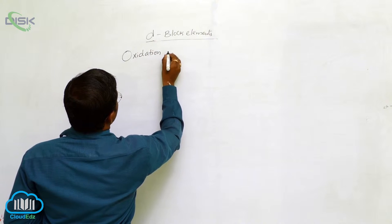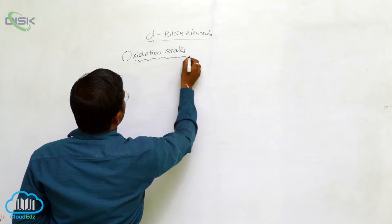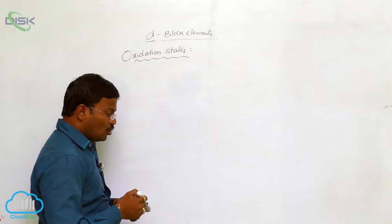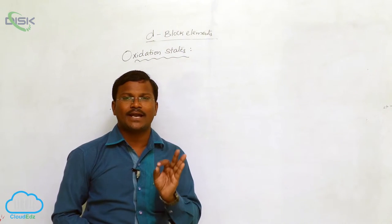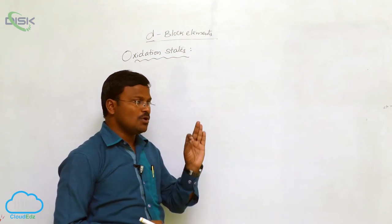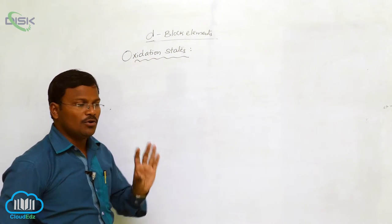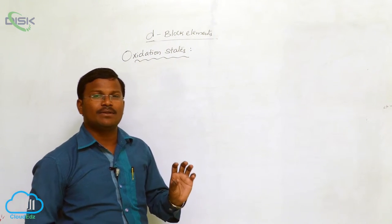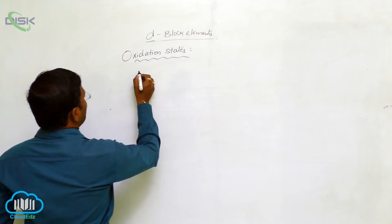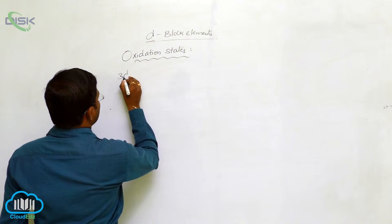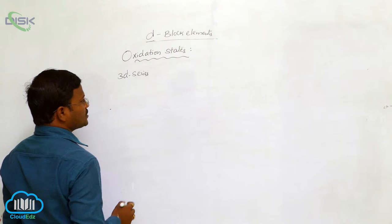Oxidation states are also called as oxidation number. It is the most important phenomenon we have to learn about each and every element belonging to all categories — s-block, p-block, d-block, and f-block — to establish the chemical behavior of such elements. Here I would like to start with the 3D series; most of our discussion will be related to elements belonging to the 3D series.